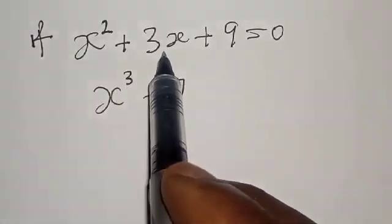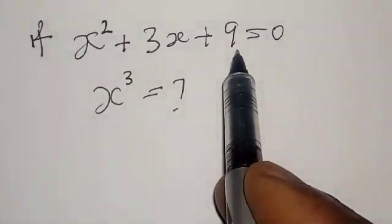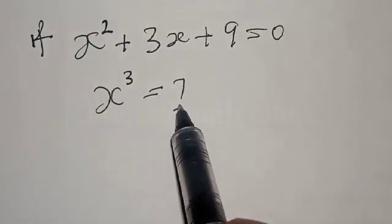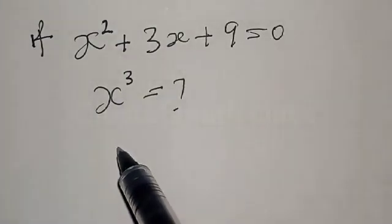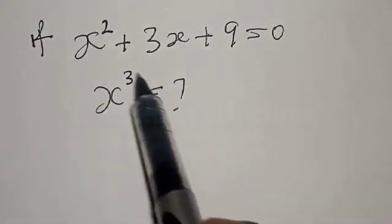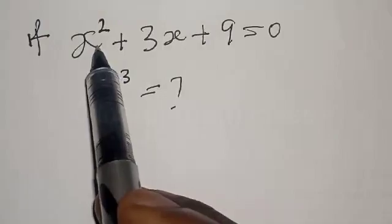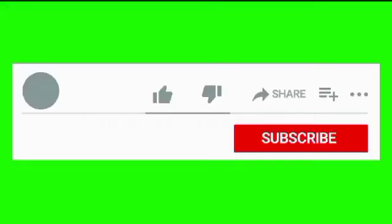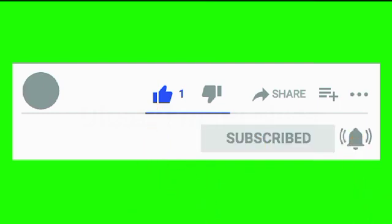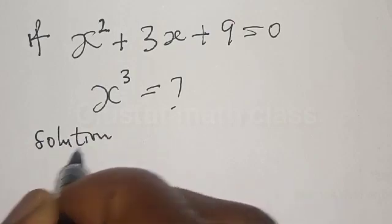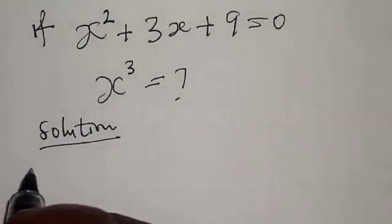If s squared plus 3s plus 9 is equal to 0, then s raised to the power 3 is equal to what? Hi everyone, welcome to my class. In this class we want to look at how we can find the value of s raised to power 3 from this given equation: s squared plus 3s plus 9 equals 0. Before I proceed, please don't forget to like, share, comment and subscribe. Thank you.